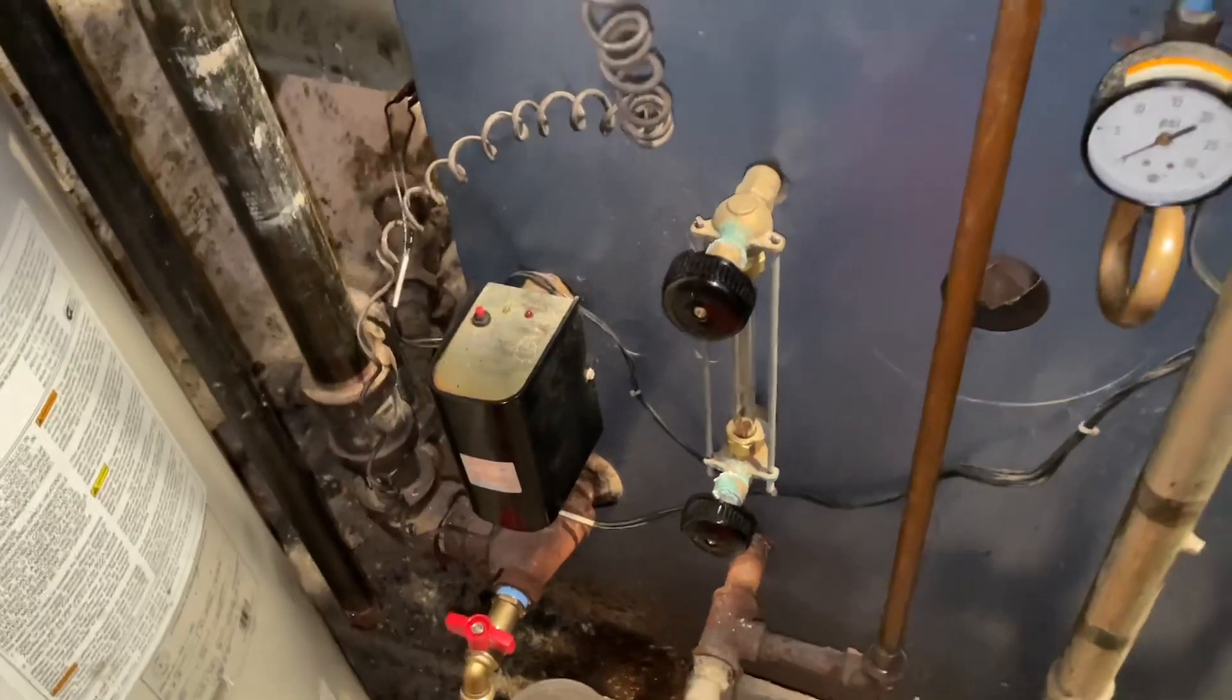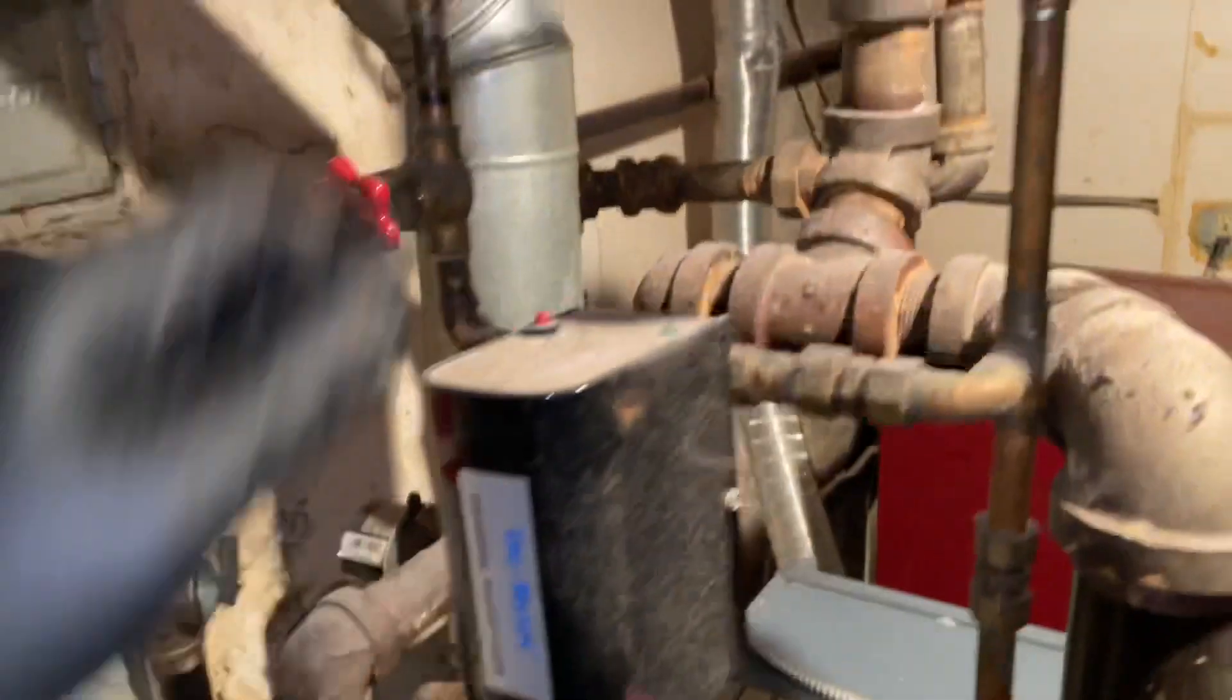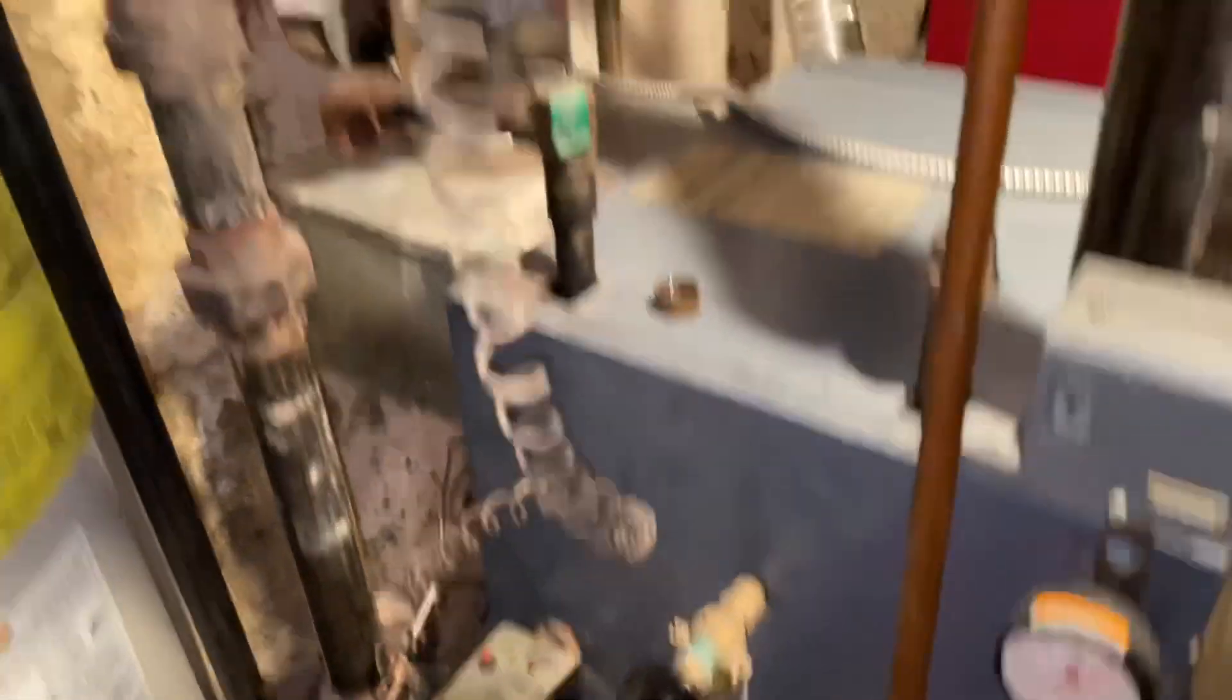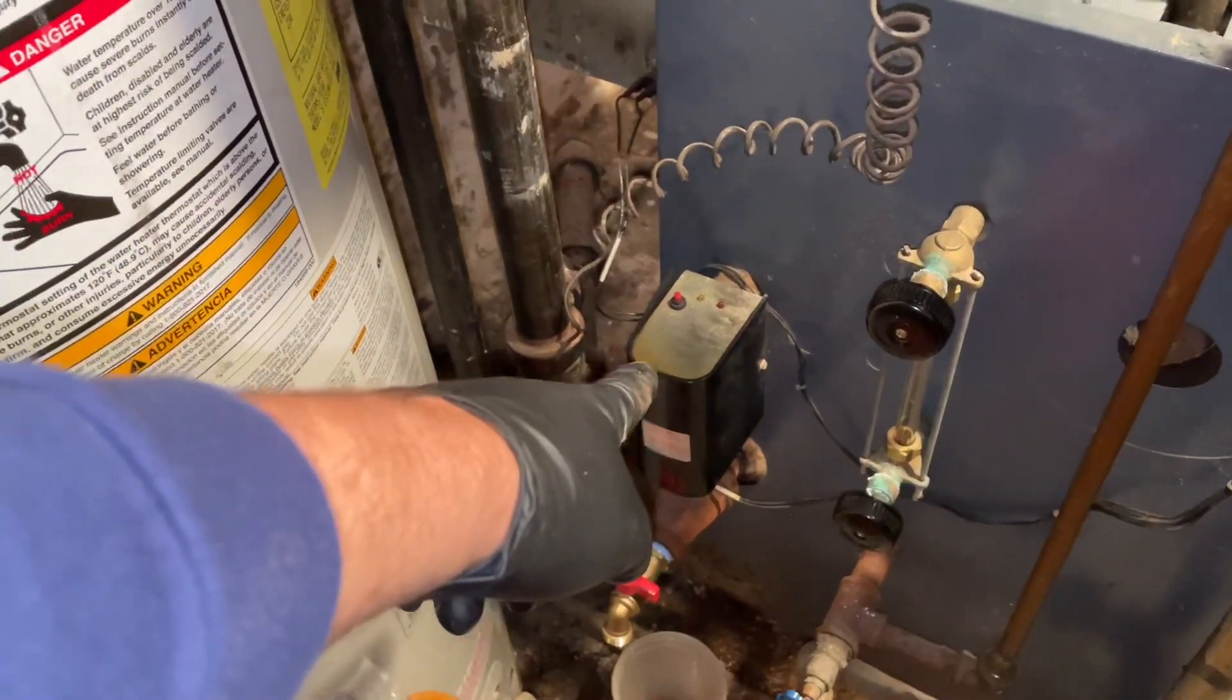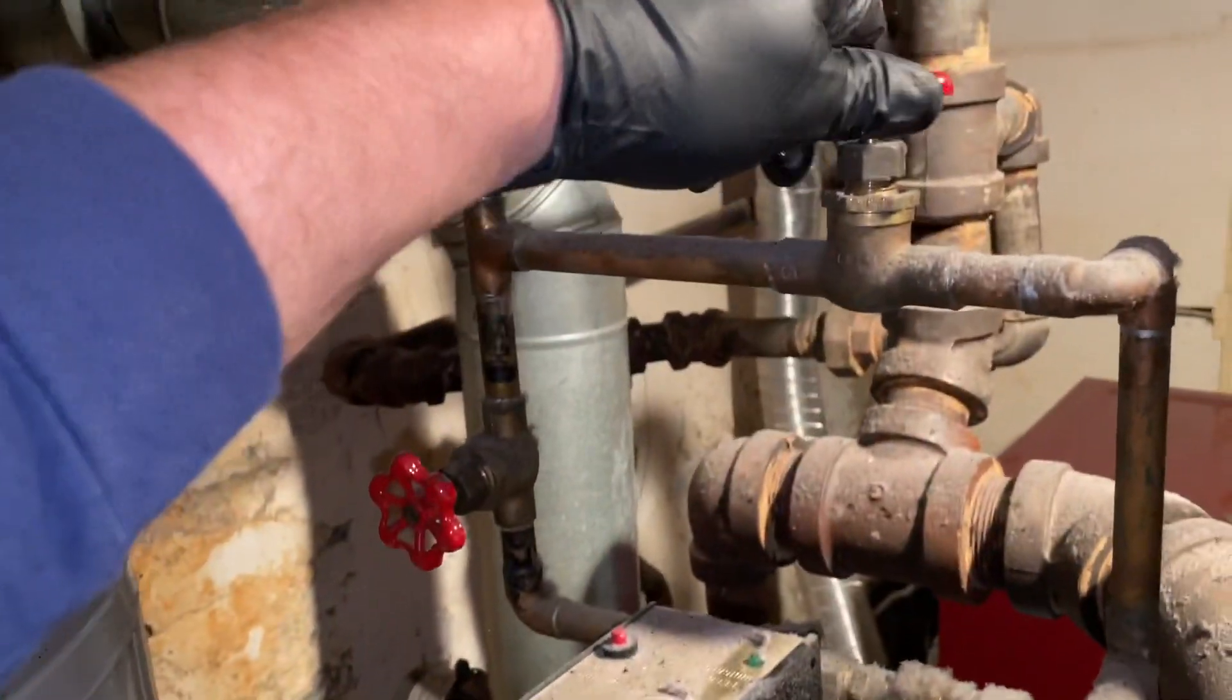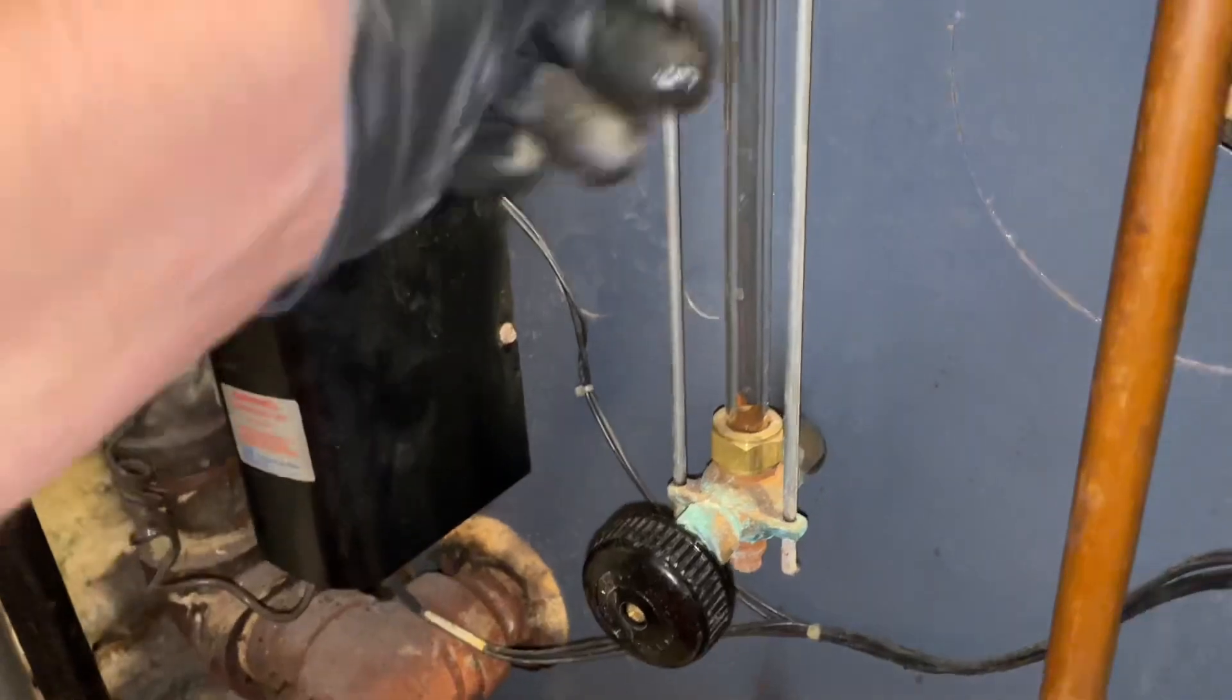All right, now she's got no water. So let's give her some water. This is called an automatic water feeder. It gets a signal from the low water cutoff and it starts filling up. This is a manual bypass valve to give it water. I'm going to watch that side glass rise up.